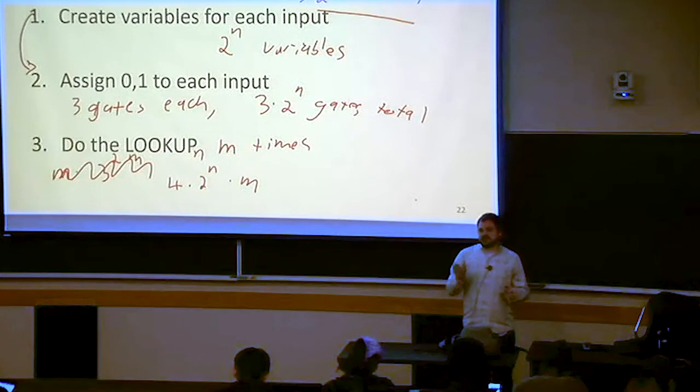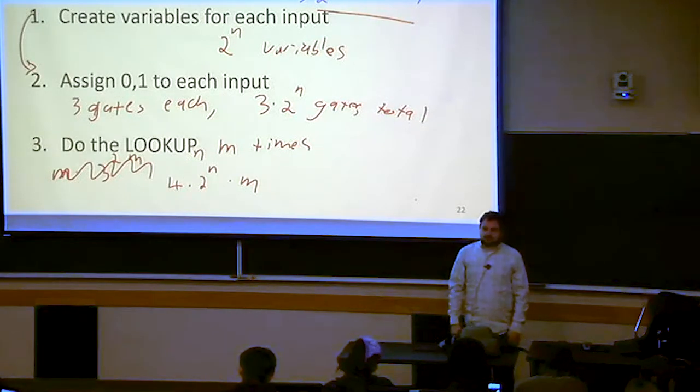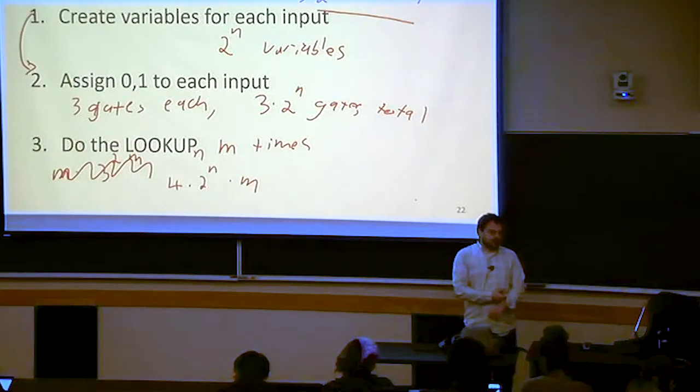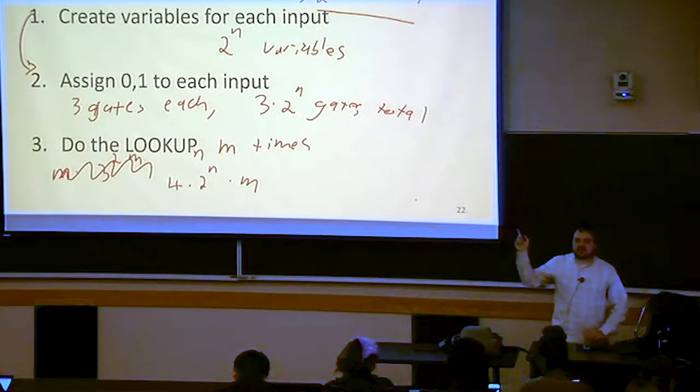So just to make things easier, I got rid of that minus 4. But this is still going to be an upper bound. There are no functions that require more than that many gates.